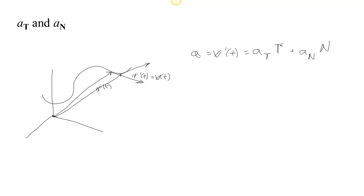This is the direction of the unit tangent, and this measures how strongly our acceleration is changing in the direction of the unit tangent. And this is the unit normal, the direction that we're turning in.